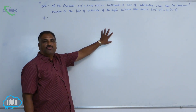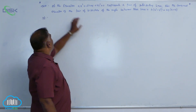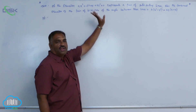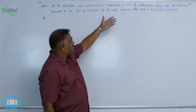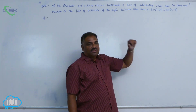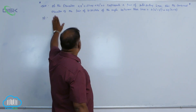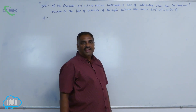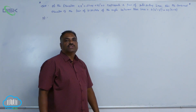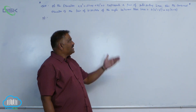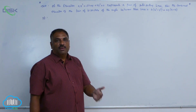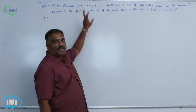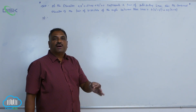The most important theorem of pair of straight lines: if the equation ax² + 2hxy + by² = 0 represents a pair of intersecting lines, then the combined equation of pair of bisectors of the angle between the lines is given by h(x² - y²) = xy(a - b). We know that this equation represents a pair of straight lines passing through the origin.